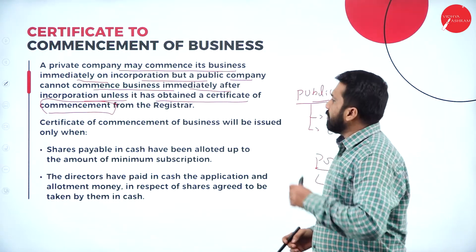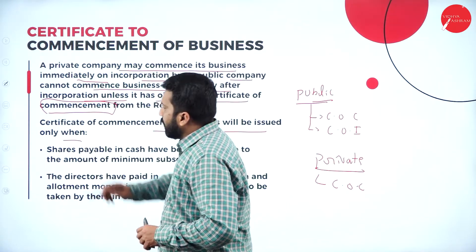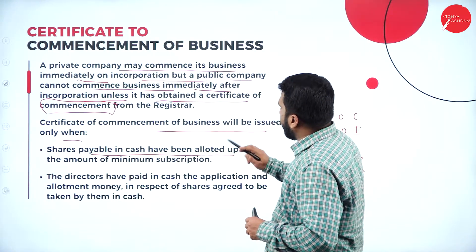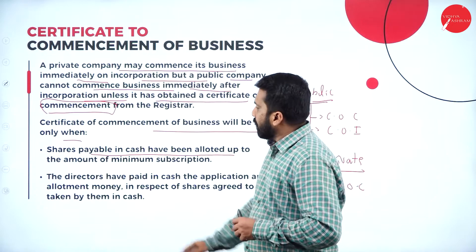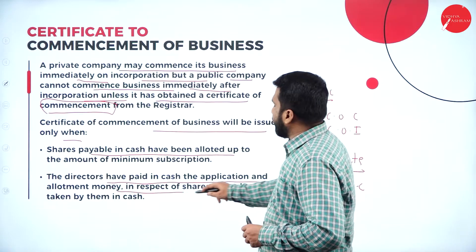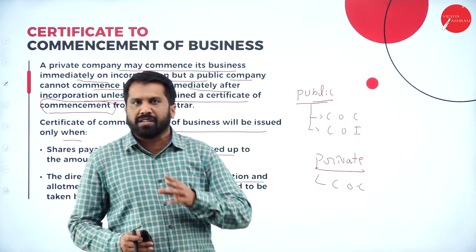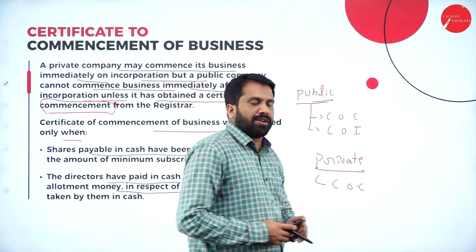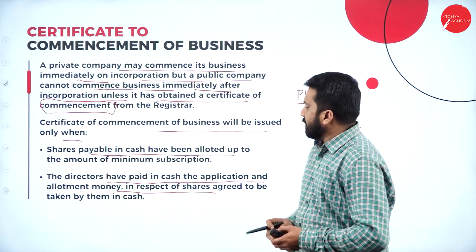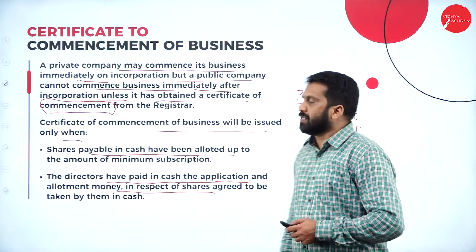For a private company, the certificate of incorporation is more than sufficient. The certificate of commencement of business will be issued only when: shares payable in cash have been allotted, and the directors have paid in cash the application and allotment money. As you already studied under issue of shares — application, allotment, first call, final call — once the application money is collected, then you can issue the certificate of commencement.